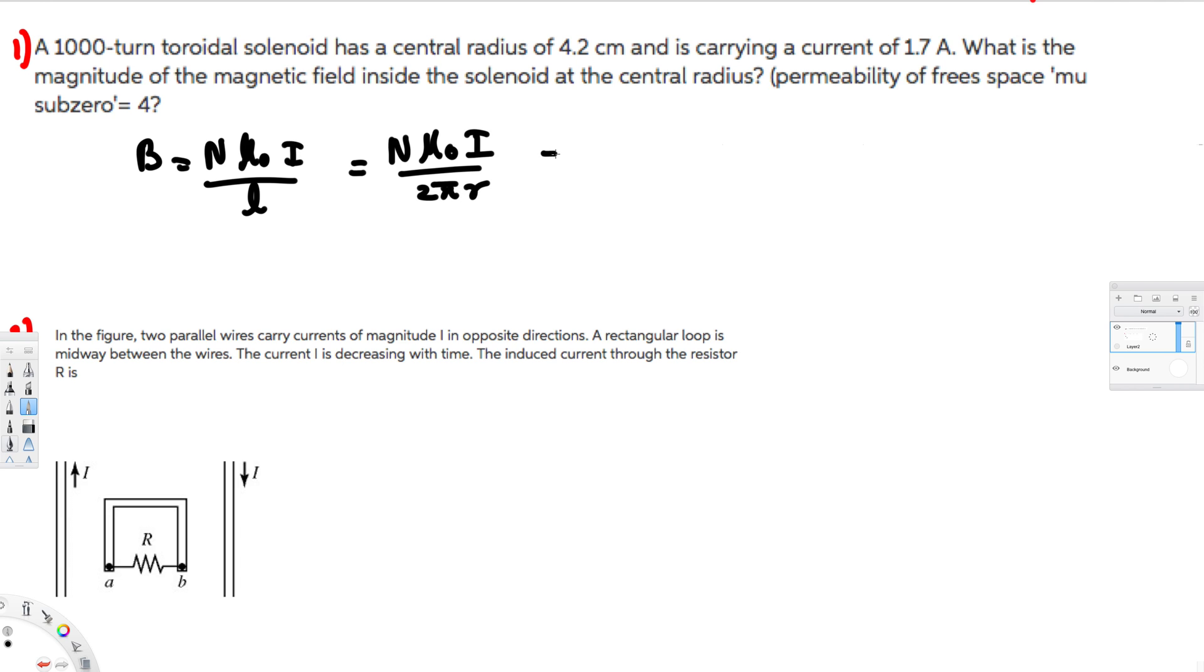Now let's plug in the values to find the magnetic field. Number of turns is 1000, the permeability constant is 4π times 10 to the power of minus 7, and the current is 1.7 amperes. Let's forget about the units for now.